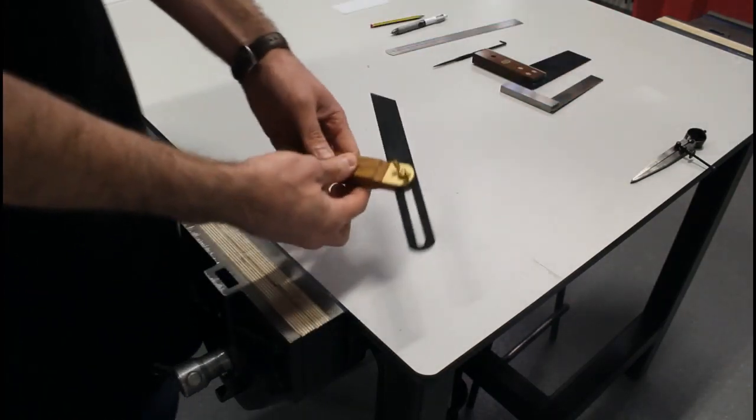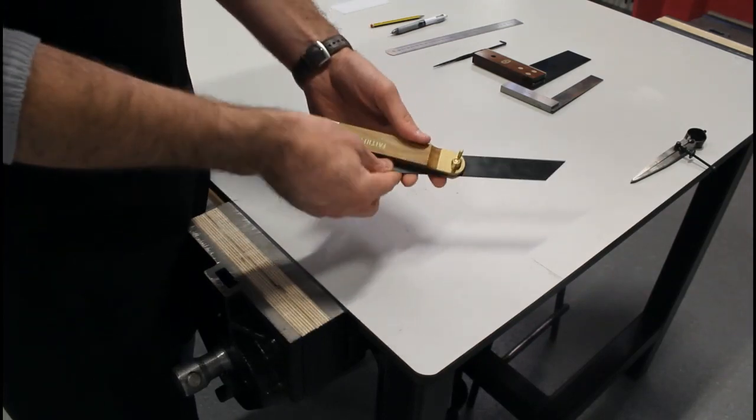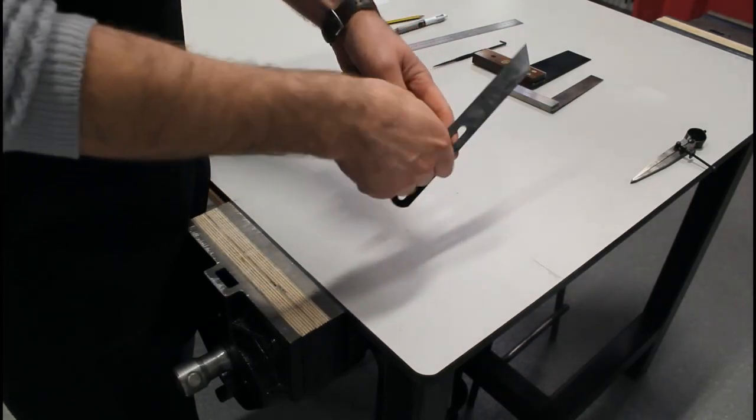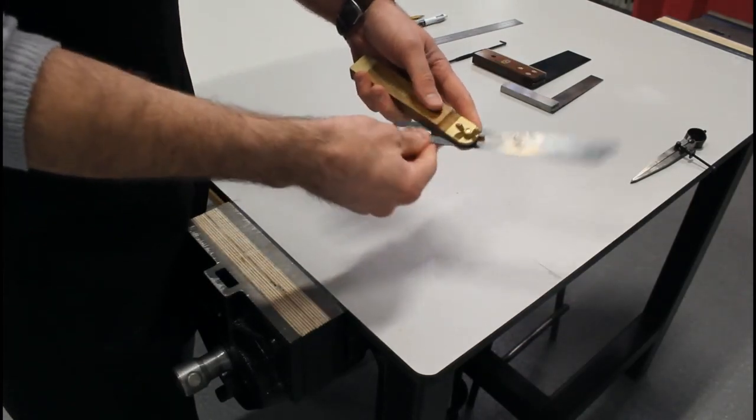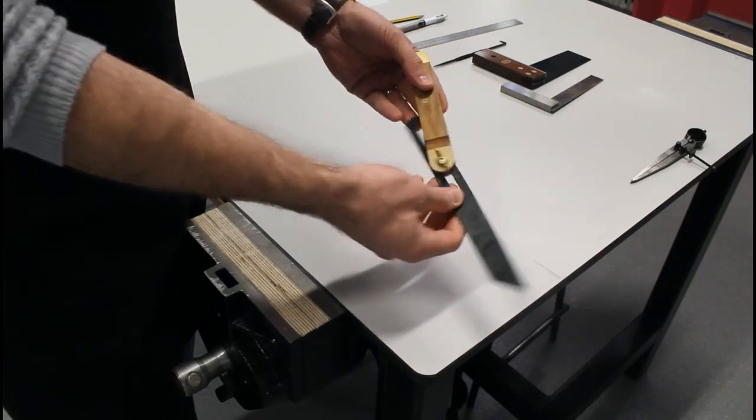This next one, you might not be familiar with, is known as a bevel. It is like a square, so I can adjust this wing nut here and adjust this blade to different angles.